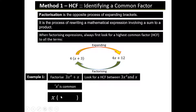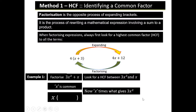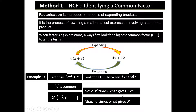Our goal is to get to a product, so the bracket will mean it's a product. We take out the x since variable x is common, and leave the rest inside. We ask: x times what gives us the first term? The first term is 3x², so x times 3x gives 3x², so 3x goes inside the bracket. Then x times what gives x for the second term? x times 1 gives us x, so it's positive 1. So factorizing 3x² + x gives x(3x + 1).